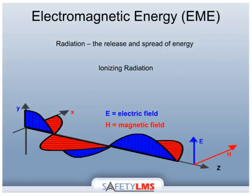Ionizing radiation has enough energy to change the chemical structure of matter at a molecular level when it is absorbed. Some examples of ionizing radiation include X-ray and gamma rays. The changes experienced by the human body are cumulative. Non-ionizing radiation does not have enough energy to change molecules or cell structure, so the energy is absorbed as heat.